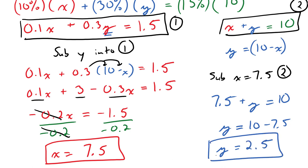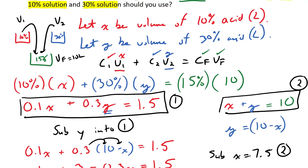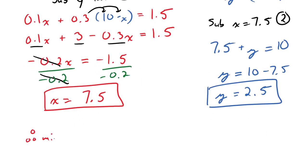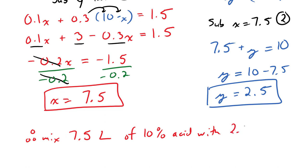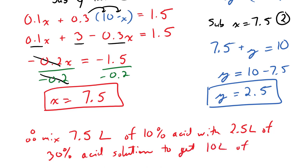X equals 7.5 liters and Y equals 2.5 liters. X was the volume of our 10% acid and Y was the volume of our 30% acid, both in liters. Therefore, mix 7.5 liters of the 10% acid solution with 2.5 liters of the 30% acid solution to get 10 liters of 15% acid.